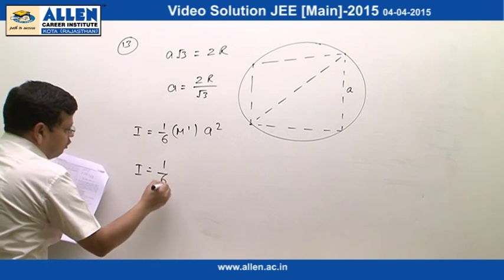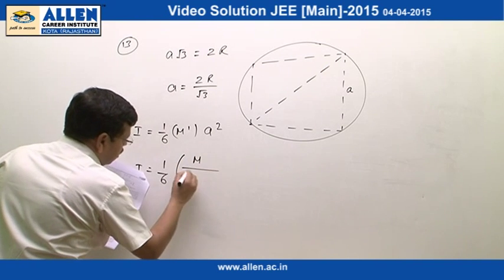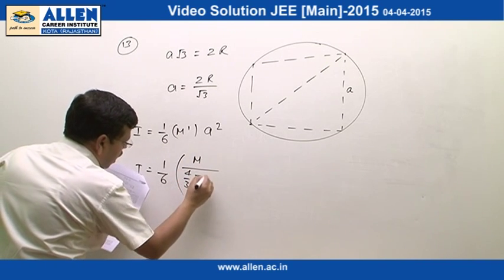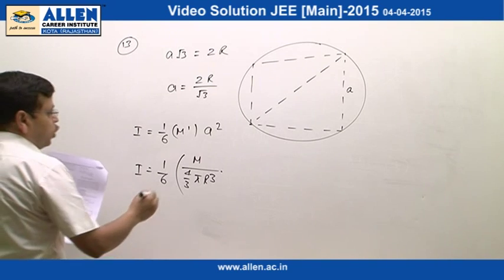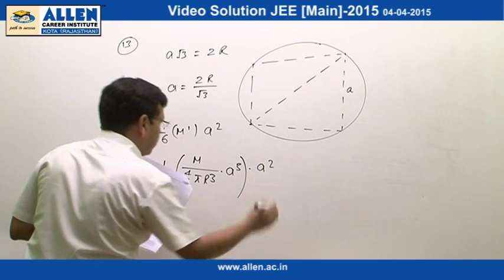We will get here 1 by 6. Mass of the cube is m divided by 4 by 3 pi r cube, into volume of the cube that is A cube, into A square.